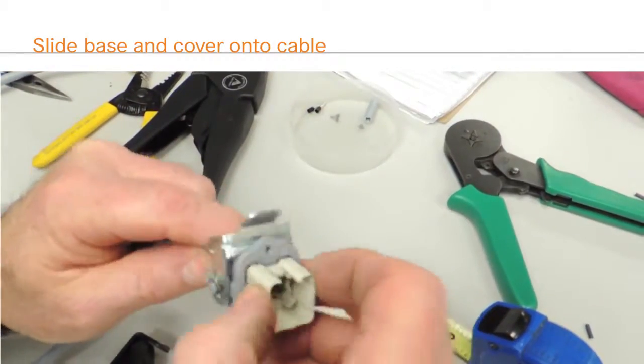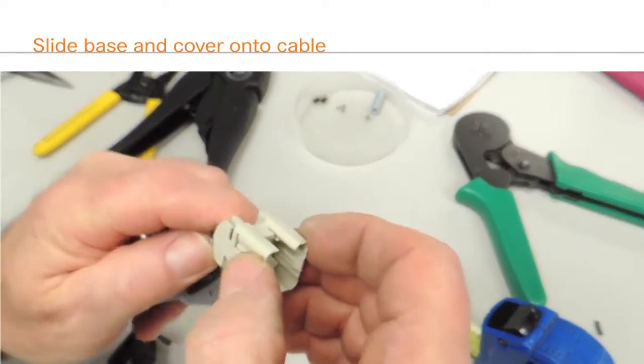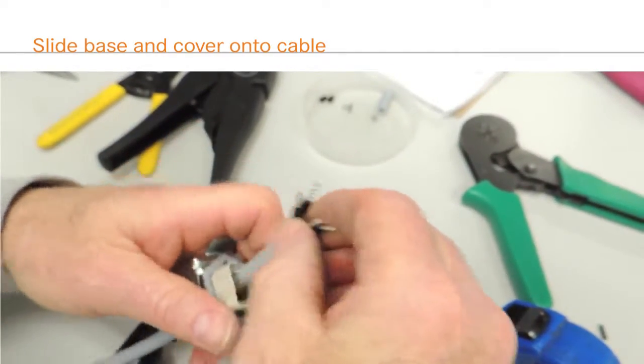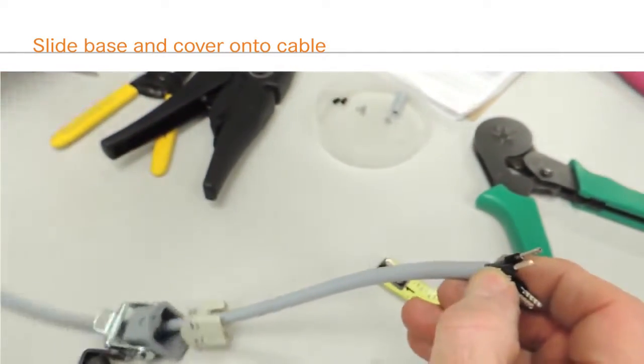Slide the EPIC HA3 panel mount base and the terminal cover onto the cable. Make sure the base is facing the right way around for the final application.